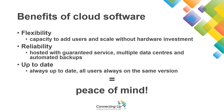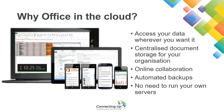So those are the benefits of cloud software, but what happens when we put Office in the cloud? You can access your data wherever you want it, including at home. It's stored centrally on OneDrive so all of your organisation can access all of your files whenever they need to. There's security so files are segmented and you can give different people different levels of access, but all files are stored centrally and backed up. You have the opportunity for online collaboration — editing files at the same time — and automated backups. And there's no need to run your own servers.